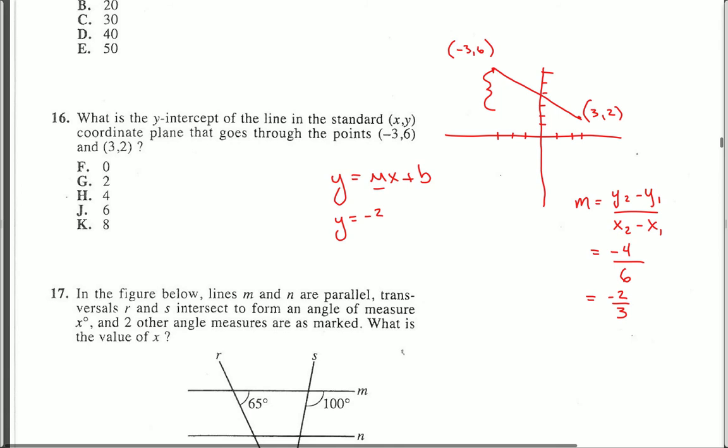y equals negative 2 thirds x plus b. In order to find the y-intercept, I now need to substitute one of these points into my equation for x and y. 2 equals negative 2 thirds times 3 plus b.